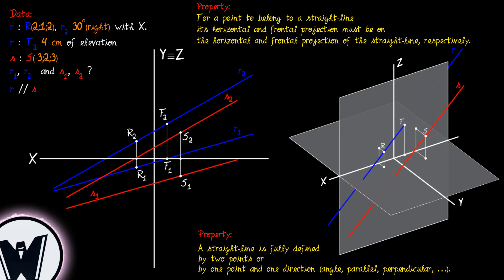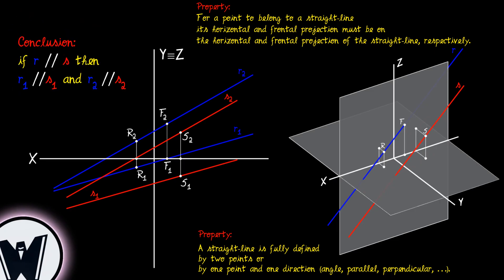The conclusion that can be withdrawn is that if two straight lines are parallel, then its corresponding projections on the reference planes will also be parallel, in this case R2 parallel to S2 and R1 parallel to S1.